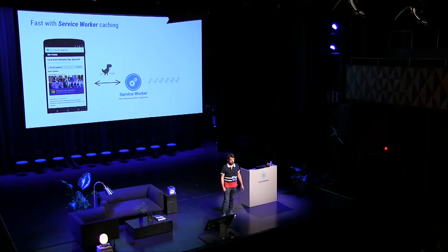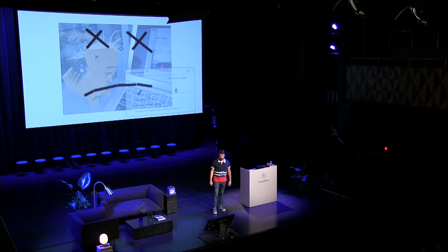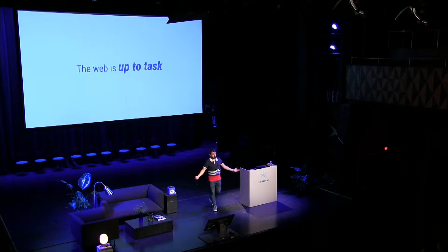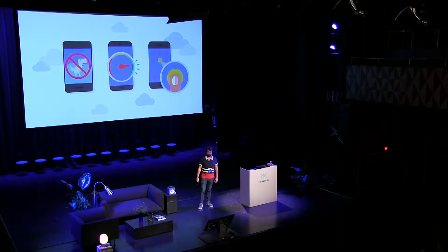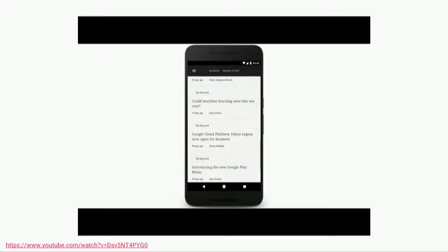With a service worker, you can cache things so it actually works offline. You can also cache things so it becomes faster — the next time you launch your app, it's already there, at least all the critical resources. This unfortunately means we will not see the dinosaur any longer, and I'm really sad about that — it's so cute. But basically, the takeaway is that the web is really ready. Apps can work offline, they can be fast and responsive.